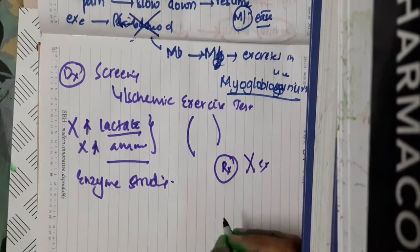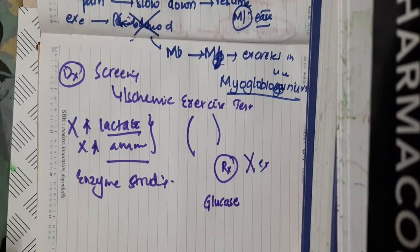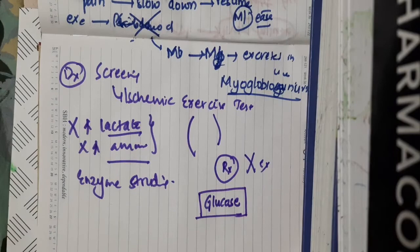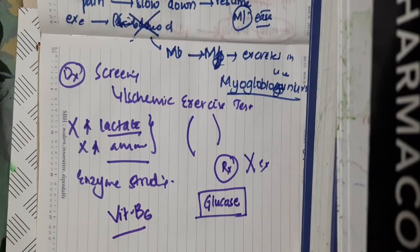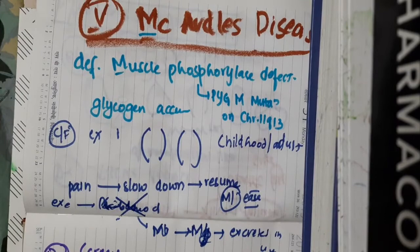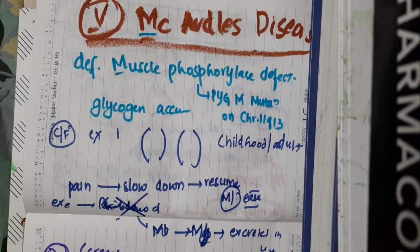For treatment, patients should avoid strenuous exercise. Even if they have to do exercise or daily activities, before exercise you should give glucose or sucrose to the patient. You can also supplement vitamin B6 to these patients. To summarize, McArdle's disease is type 5 glycogen storage disease — remember M for muscle, all symptoms are in the muscle, and they are precipitated by exercise.